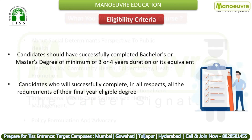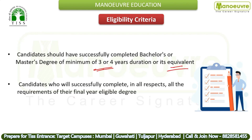Now let's look at the eligibility criteria. A candidate should have successfully completed a bachelor's or master's degree of minimum three or four years duration, or its equivalent. Candidates who have successfully completed all requirements of the final year are also eligible, so final-year students can apply as well.